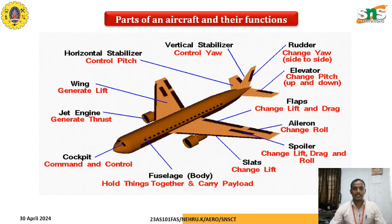The slat changes the lift and drag — it can increase or decrease lift, or increase or decrease drag. The aileron helps to roll or change roll in either clockwise or anticlockwise rotation. The spoiler also helps to change lift, drag, and rolling motion. The slat is attached at the nose part of the wing; when it is operated, the lift changes. The cockpit helps transmit communications and provides command and control of the entire flight operation. The jet engine generates thrust force and the wing generates lift force.